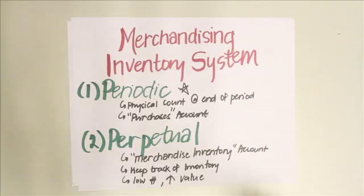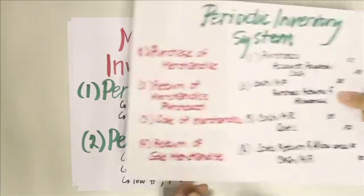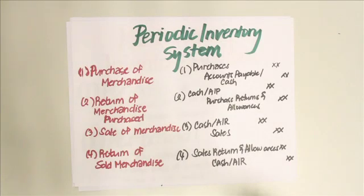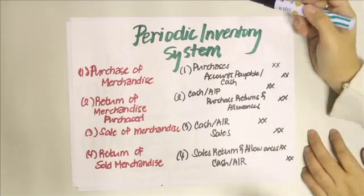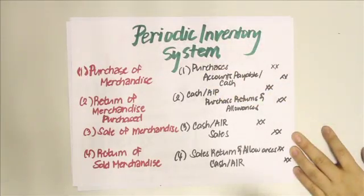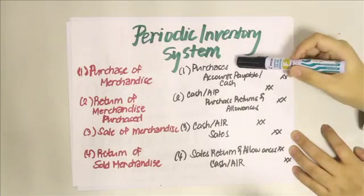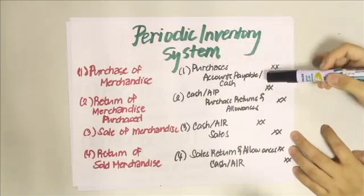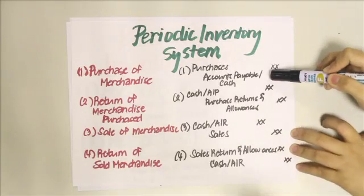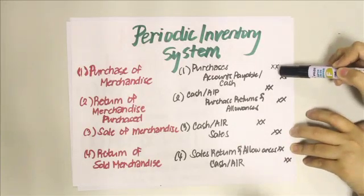Now we look at accounting under the periodic inventory system. For a purchase of merchandise, you use the purchases account — you make a debit to purchases and then credit either accounts payable or cash depending on the terms of purchase.